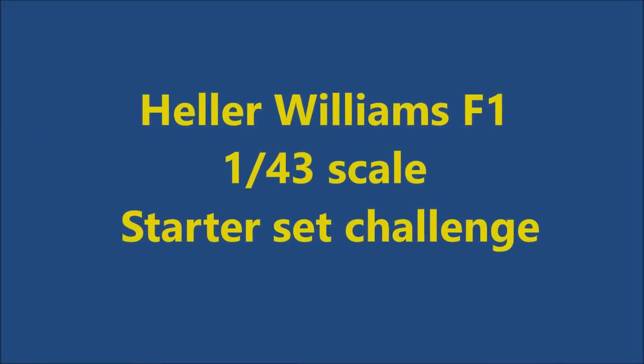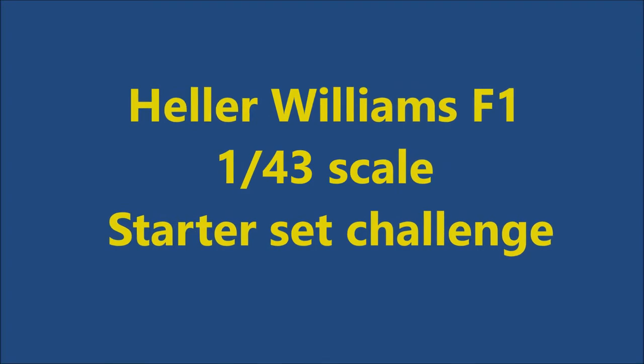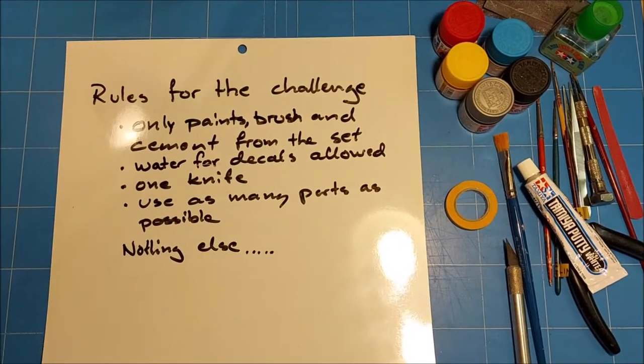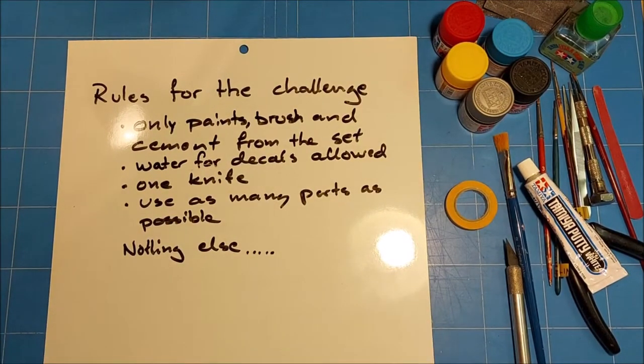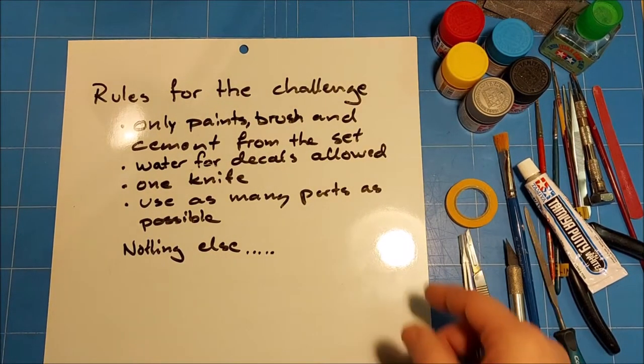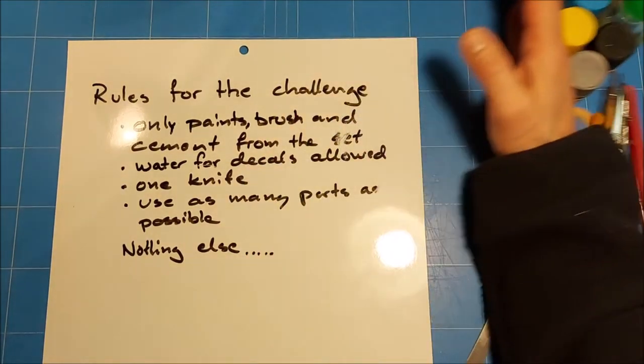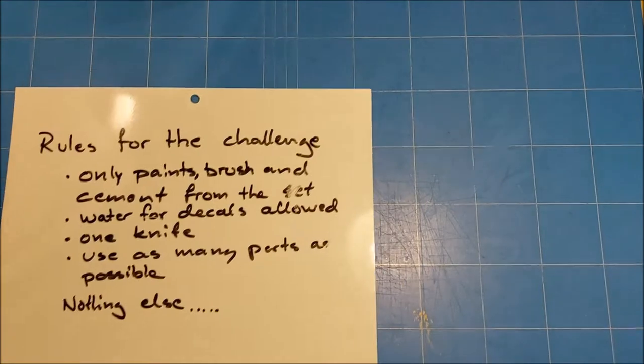Hi and welcome to Building My Model. Today we'll do a starter set challenge of the Heller Williams Formula 1 in 1:43 scale. The rules are simple: use what's in the set, some water for the decals, and a knife. Use as many parts as possible, no easy options here.